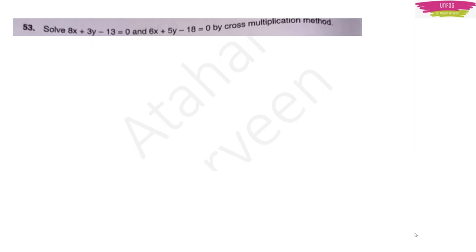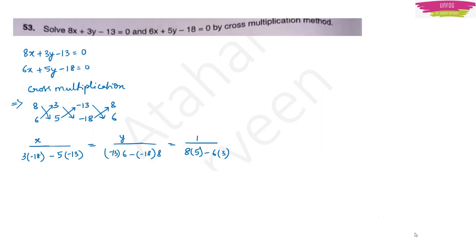For the cross multiplication method, you write the coefficients of x and y one below the other — 8 and 6. Then write x upon (3 × −18) minus (5 × −13) in the denominator. Every time in the denominator there will be a minus between the two terms, but if that term already has a minus sign, include that also. Below x and y you write the respective terms, and this equals 1 upon (8 × 5 − 6 × 3). This is the cross multiplication procedure.